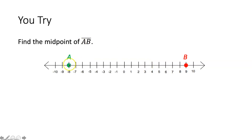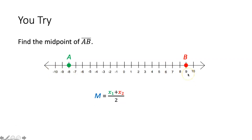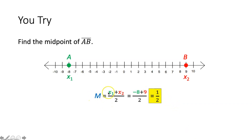Now you try! Doing the same thing — we want to find the midpoint of segment AB. Since the endpoints are on a number line, we add together those two x values and divide by 2. It doesn't matter which is x sub 1 or x sub 2. Taking negative 8 as x sub 1 and 9 as x sub 2: negative 8 plus 9 is positive 1, and 1 divided by 2 is just one half. So the midpoint of segment AB is at one half on the number line. You could have flipped these and still gotten the same answer.